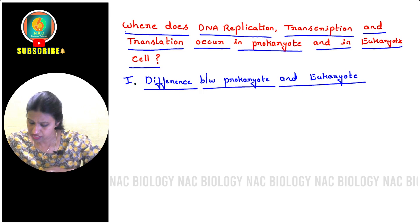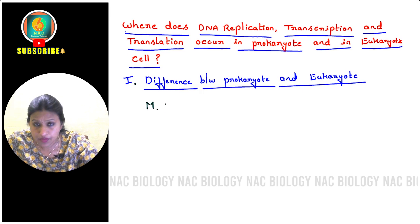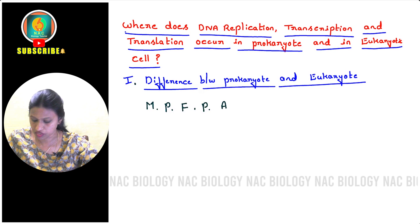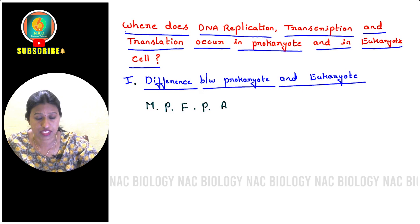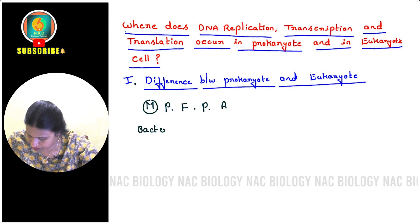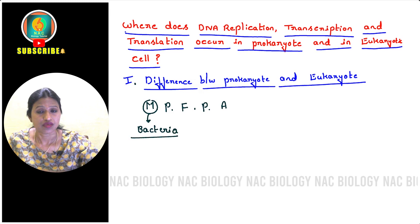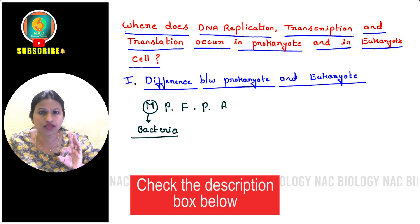The five kingdoms we studied are: Kingdom Monera, Kingdom Protista, Kingdom Fungi, Kingdom Plantae, and Kingdom Animalia. Kingdom Monera includes bacteria — the sole members of this kingdom are bacteria, which means bacteria are the only organisms considered as prokaryotic cells.